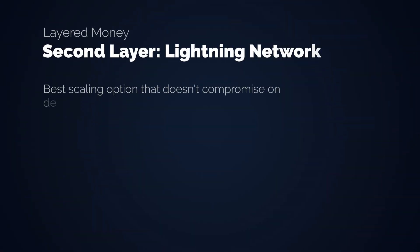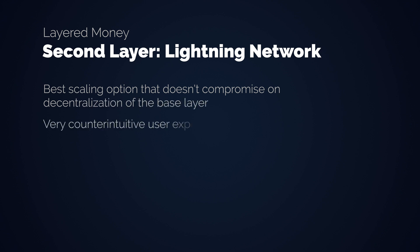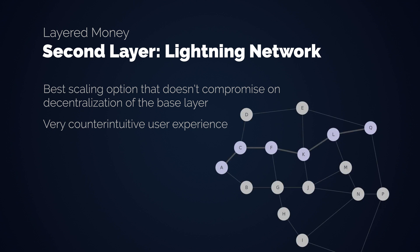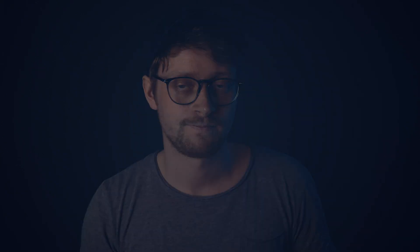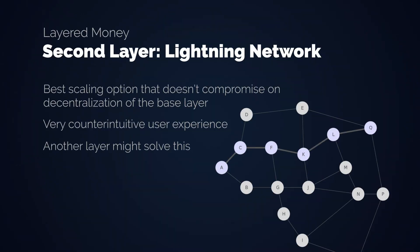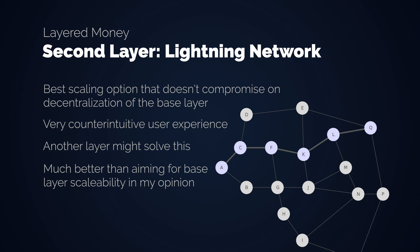I must say though that I'm still a little bit of a Lightning skeptic. I think it's the best scaling option we currently have that doesn't compromise the decentralization and security of the base layer. However, it has a user experience problem in my eyes, as opening channels and filling them with liquidity before actually using them is super counterintuitive. We will see if there will be another layer on top that fixes this somehow. Also, Lightning is still missing a bit of a killer app, which is something that could potentially change with Strike Global. I believe it's still the best scaling option available and much better than aiming to settle every micropayment on the base layer like some cryptocurrencies want to. I'm curious about your opinion on this — let me know what you think about this whole scaling and medium of exchange topic.